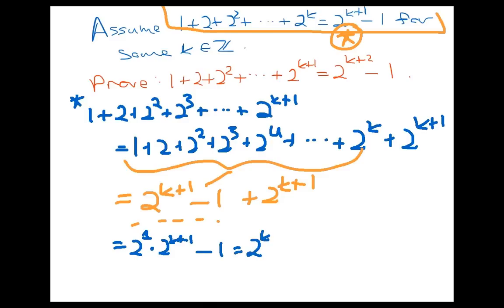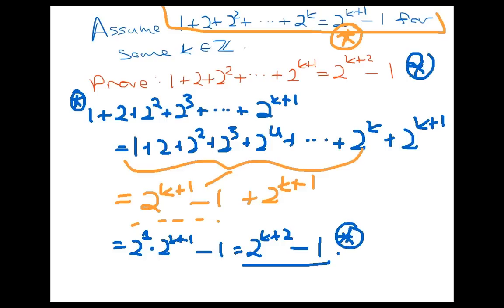That 2 is just 2 to the first power, so I can use the laws of exponents from algebra to rewrite: 2 to the first times 2 to the k plus 1 is 2 to the k plus 2, and that has 1 subtracted from it. Pulling back to look at the whole scope, I've shown that the sum 1 plus 2 plus 2 to the second, up to 2 to the k plus 1, is indeed equal to 2 to the k plus 2 minus 1. And that's what I wanted to show.